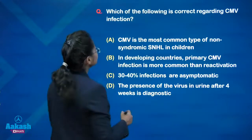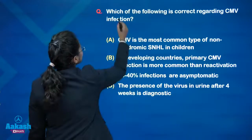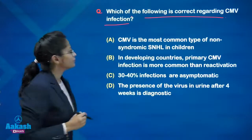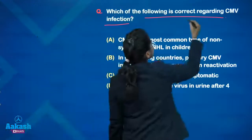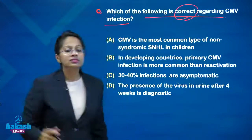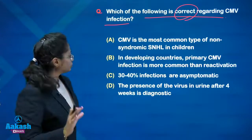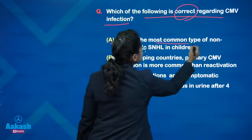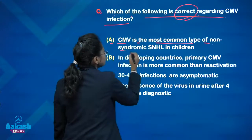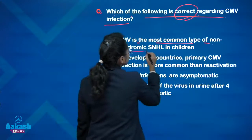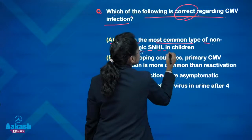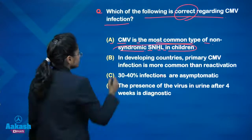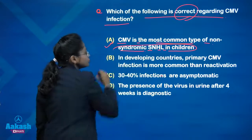Next question: which of the following statements are correct regarding CMV infection? They are asking about the correct statement about cytomegalovirus infection. Number one: CMV is the most common type of non-syndromic sensorineural hearing loss in children. This first statement is true.